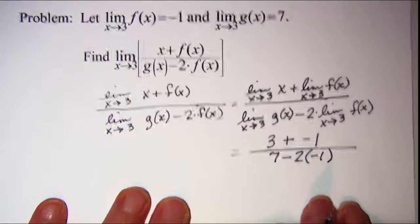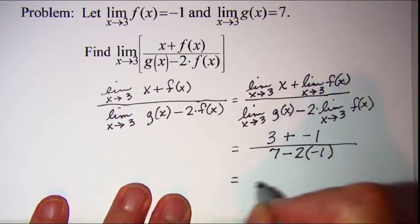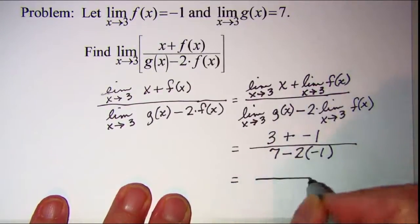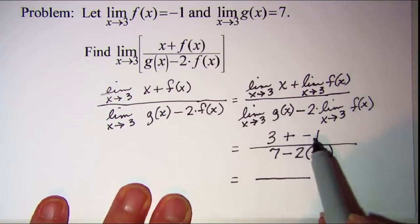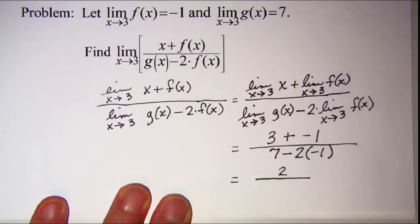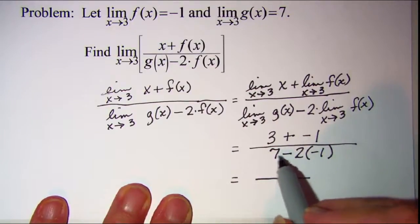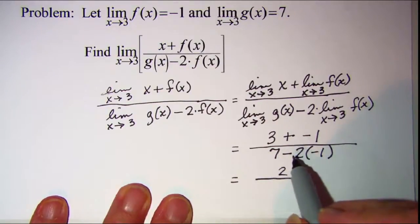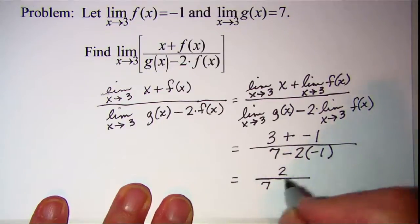Now we just need to do the math. In the numerator we have 3 plus negative 1, which is 2. In the denominator we have 7, and negative 2 times negative 1 is positive 2, giving us 7 plus 2 which is 9. This gives us a final limit of 2 over 9.